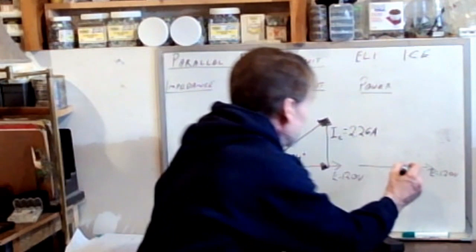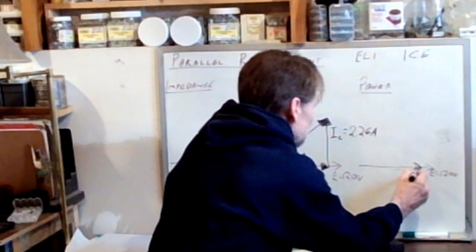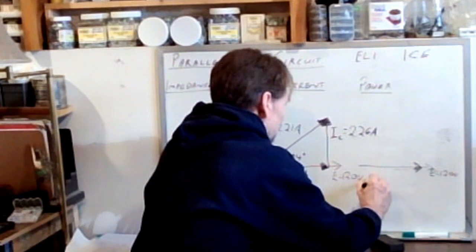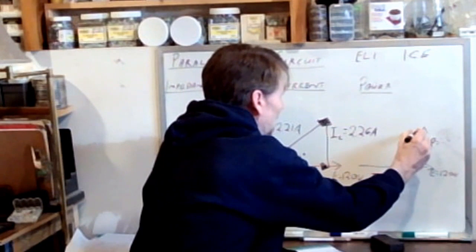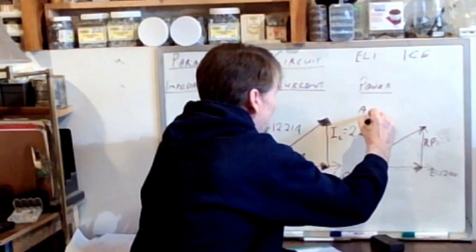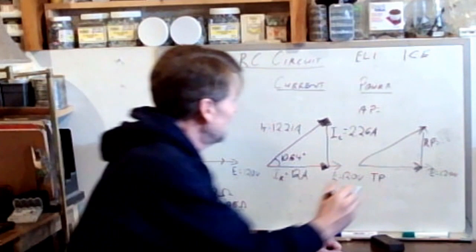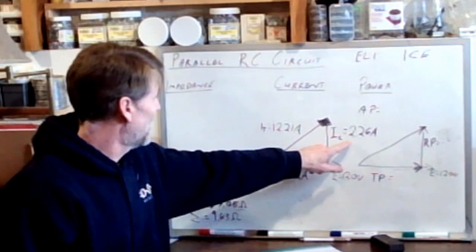And then we can also move forward and we can find all of our powers. So we know at zero degrees, it's not a current vector, just power. At zero degrees, what kind of power is that? That's the true power. At 90 degrees, that is reactive power. And the hypotenuse of a right-angled triangle is the apparent power.